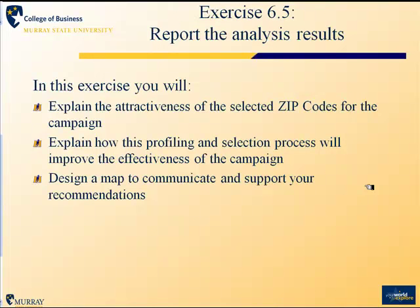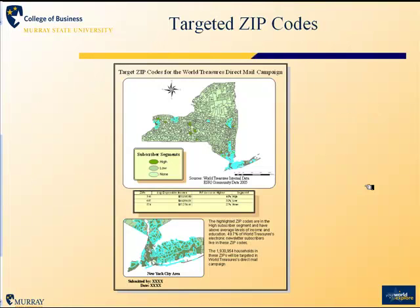In Task 5, we report the analysis results including a map to support our recommendation. We'll explain why the selected zip codes are very attractive for this direct mail campaign, why we think the profiling selection process will improve our return ratio and sales ratio, and we'll design a map in layout view to support those recommendations. This shows where those zip codes are concentrated and illustrates the demographic differences that make them more successful targets than a generalized mailing.